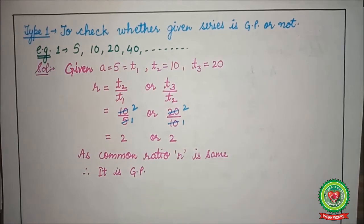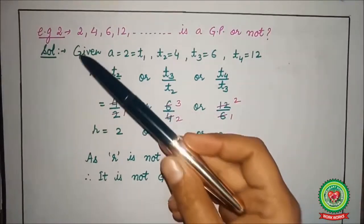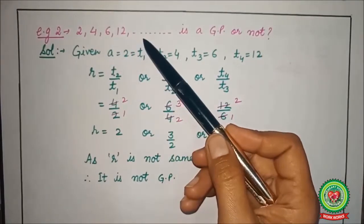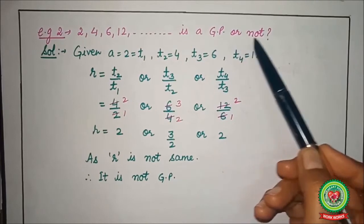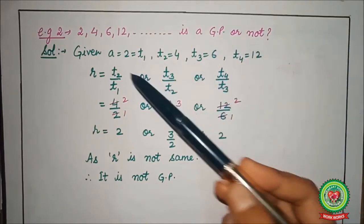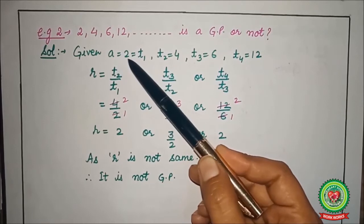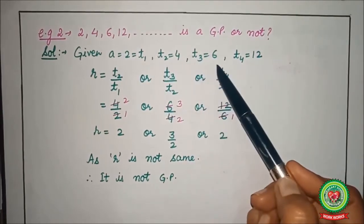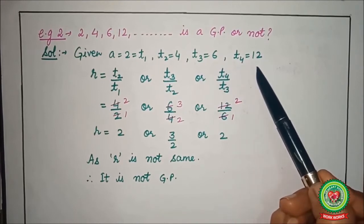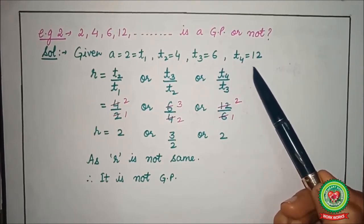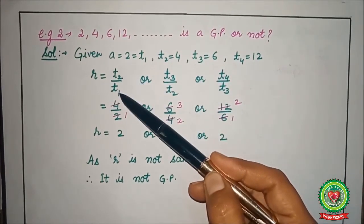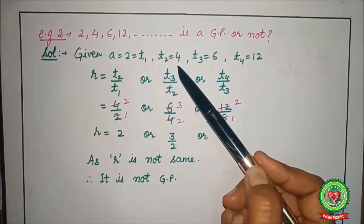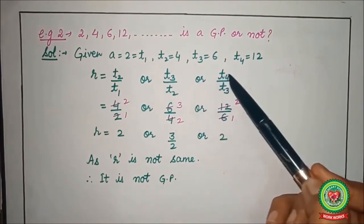Let's take one more example. Is 2, 4, 6, 12 and so on a GP or not? Again with the same pattern, here first term a equals 2, second term is 4, third term 6, and fourth term is 12. Now find the common ratio, second term divided by first term or third by second or fourth term by third term.